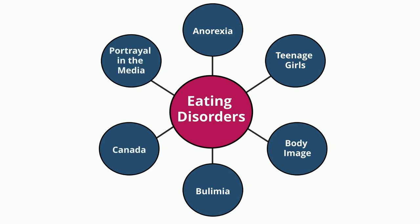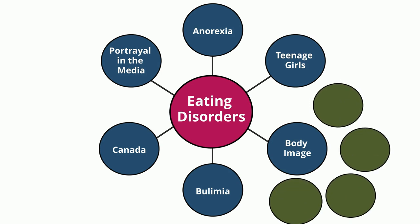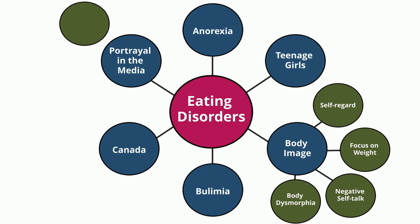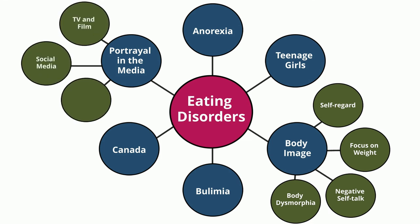Now we branch out with words related to our subtopics. I can branch out from body image to self-regard, focus on weight, negative self-talk, and body dysmorphia. And I can branch out from portrayal in the media to TV and film, social media, and Instagram influencers.